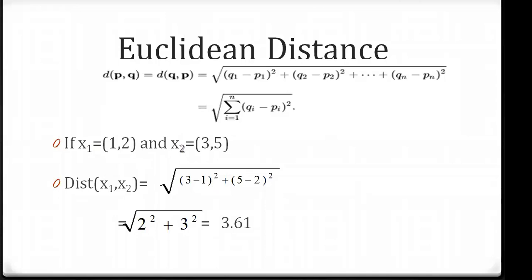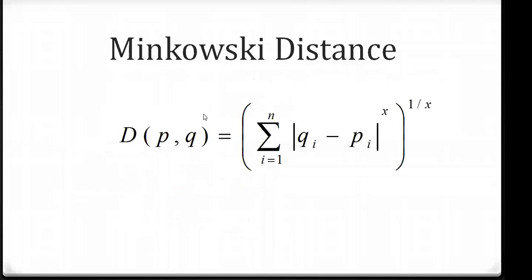The next measure is Minkowski distance. Its formula is: summation of (qi - pi)^x, raised to the power of 1/x. There is a very good relationship between all three distance measures. If you substitute x = 1 in the Minkowski formula, it becomes Manhattan distance. If x = 2, the formula becomes Euclidean distance.